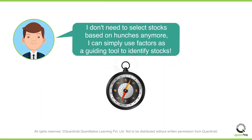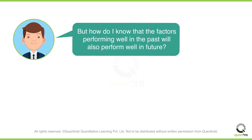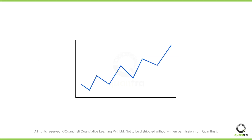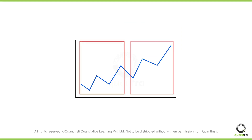This means that if I follow the factor-based approach, I don't need to select stocks based on hunches anymore. I can simply use factors as a guiding tool to identify stocks. But how do I know that the factors performing well in the past will also perform well in future? We can never be 100% sure. But studies have shown that factors are persistent in the long term, so the probability of factors persisting beyond short-term fluctuations and lasting for longer periods of time is higher.